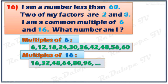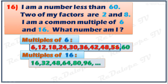The multiples of 6 less than 60 are: 6, 12, 18, 24, 30, 36, 42, 48, and 56. For the multiples of 16 less than 60: 16, 32, 48. The common multiple of 6 and 16 is 48.